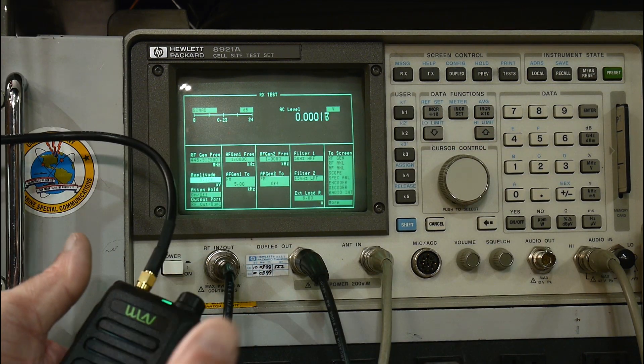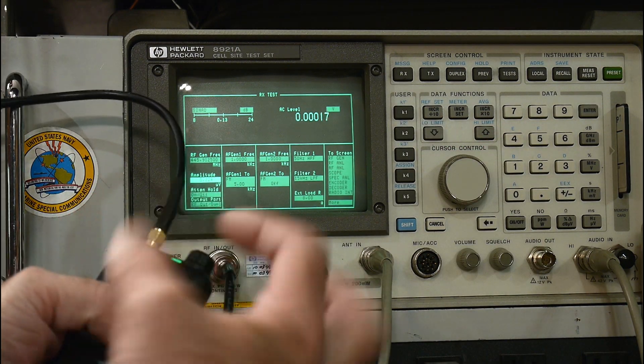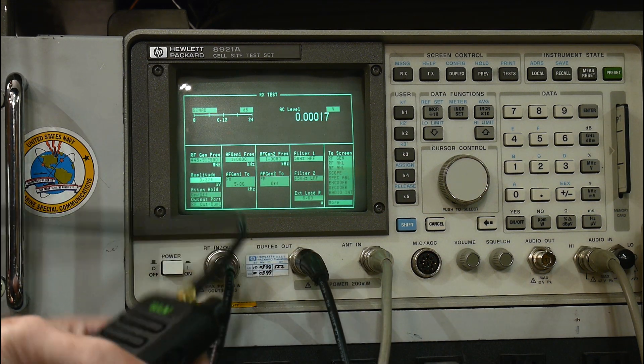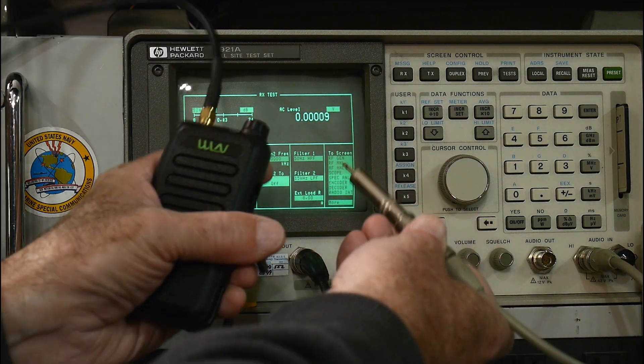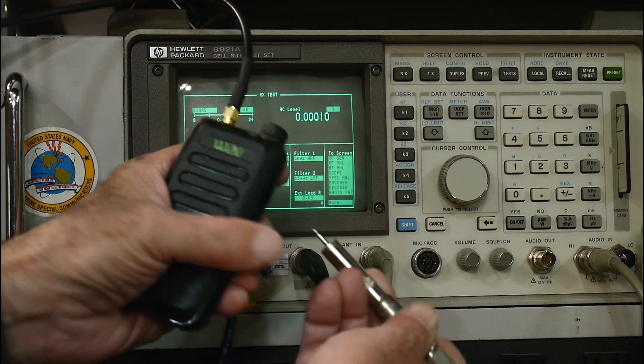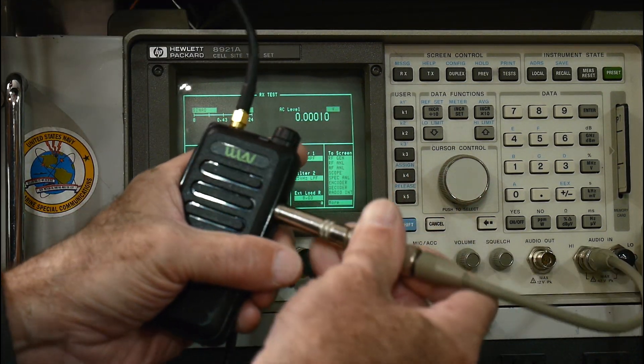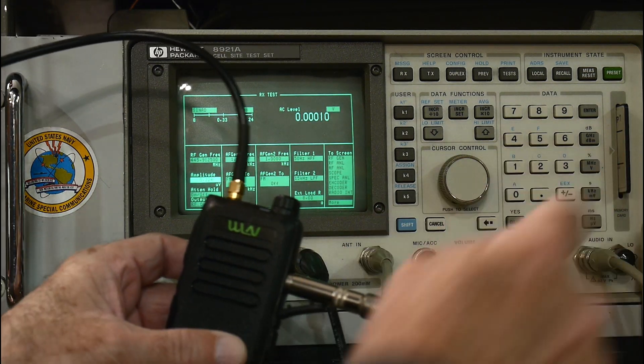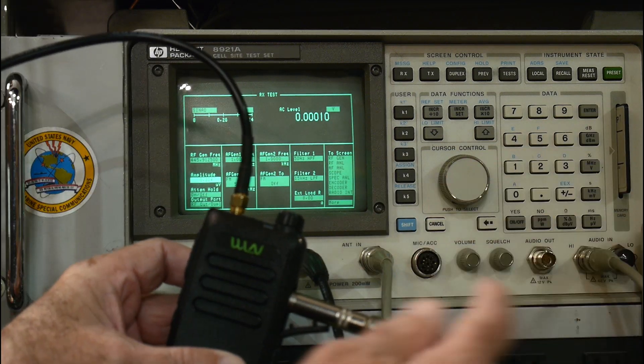So what we want to do is we want to make some quantitative measurement of that raspiness, right? So that's annoying. So what we're going to do is we're going to take an adapter here that has the right connector on it, and we're going to plug that into the radio. So now the earphone is going to go into the analyzer.